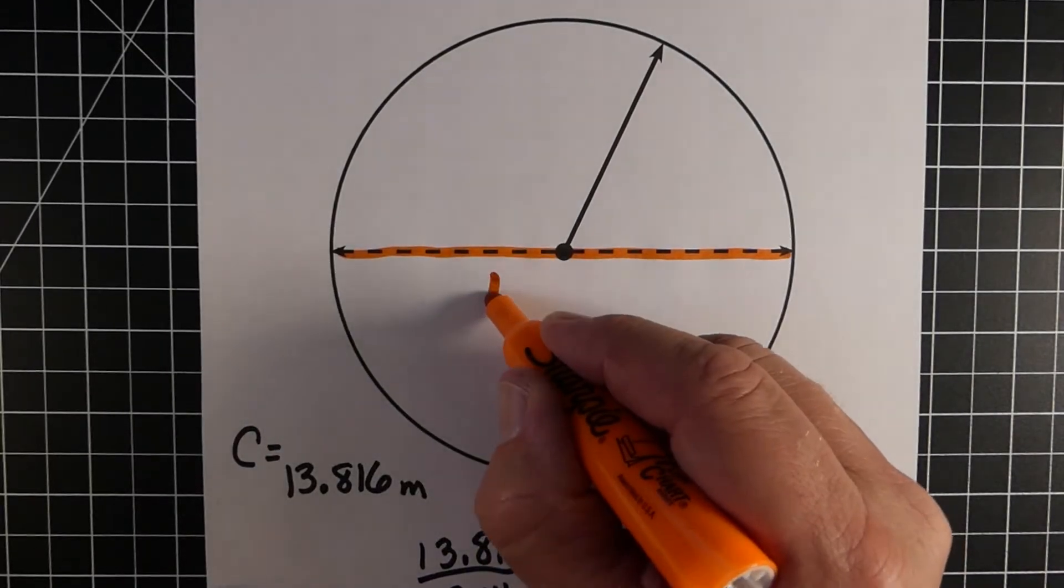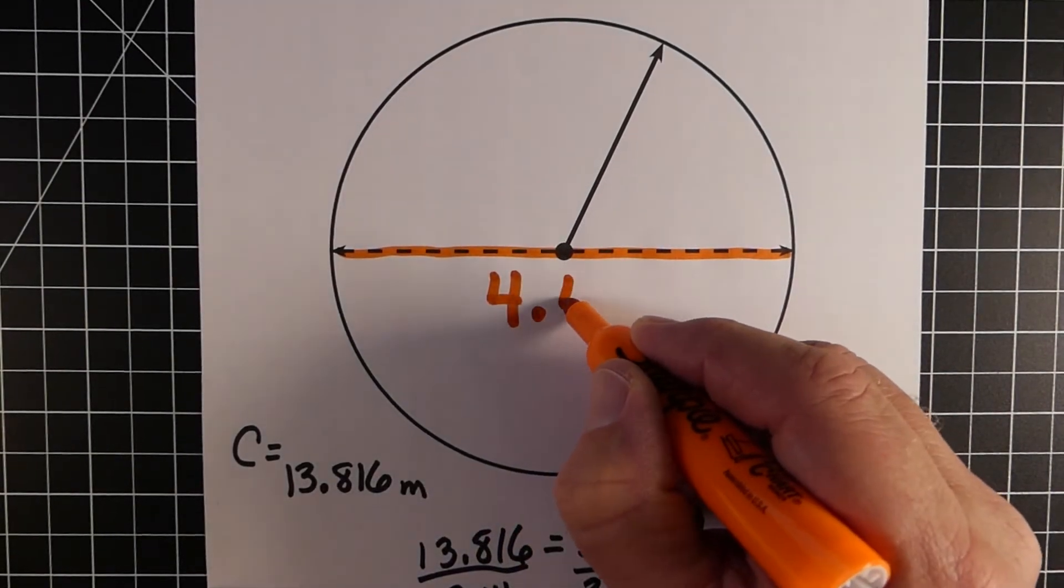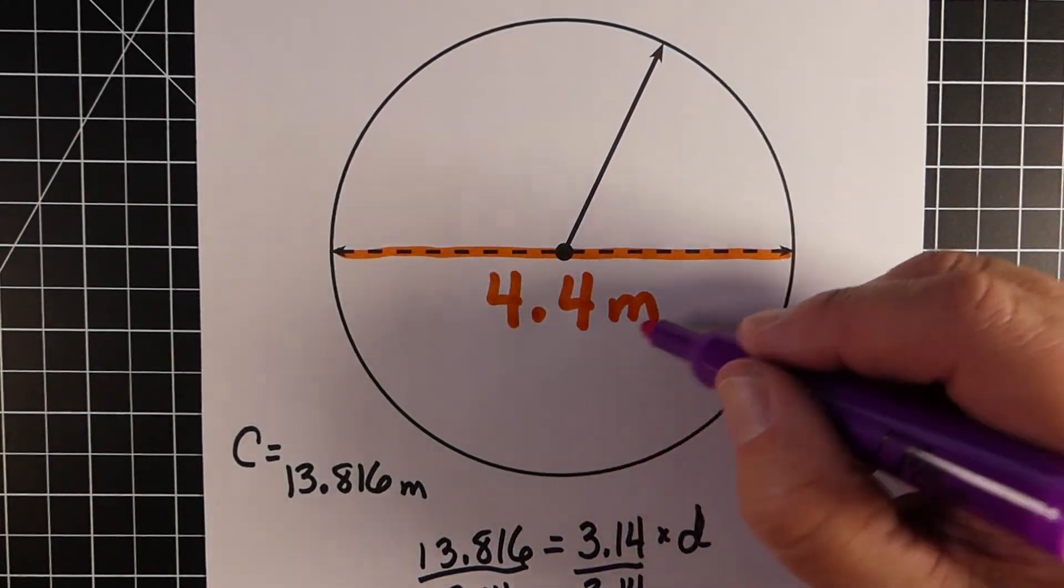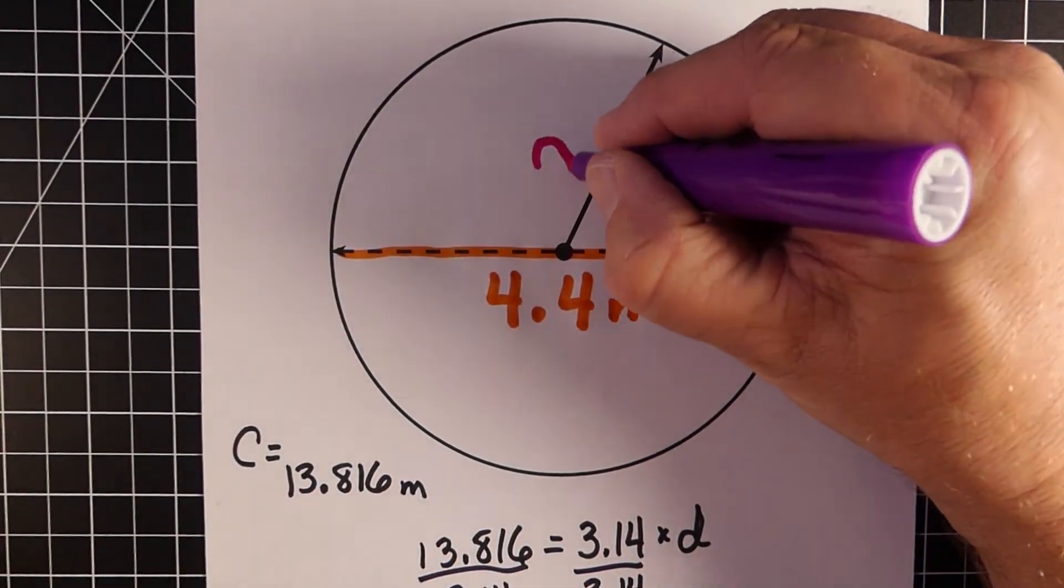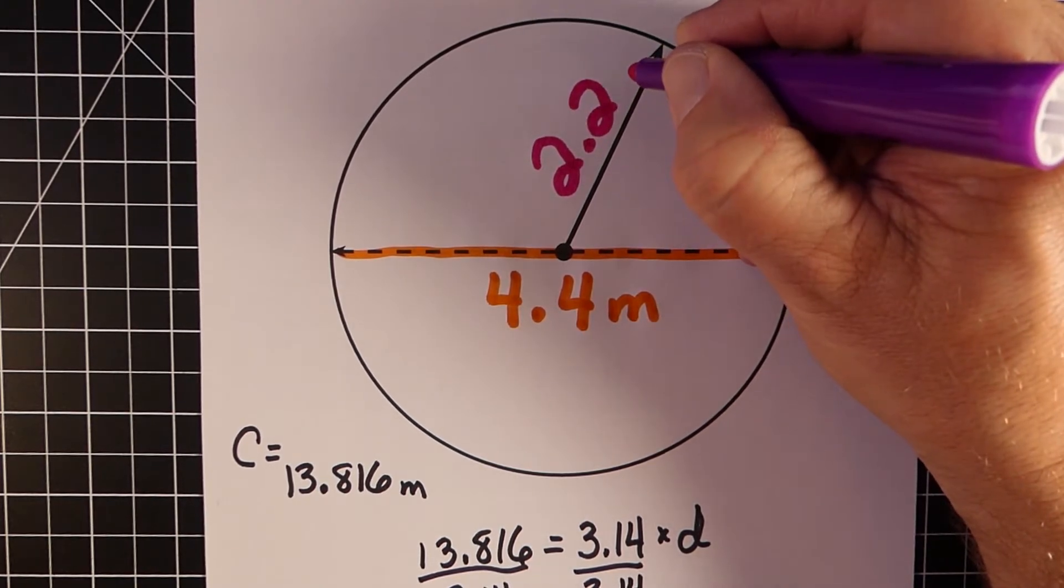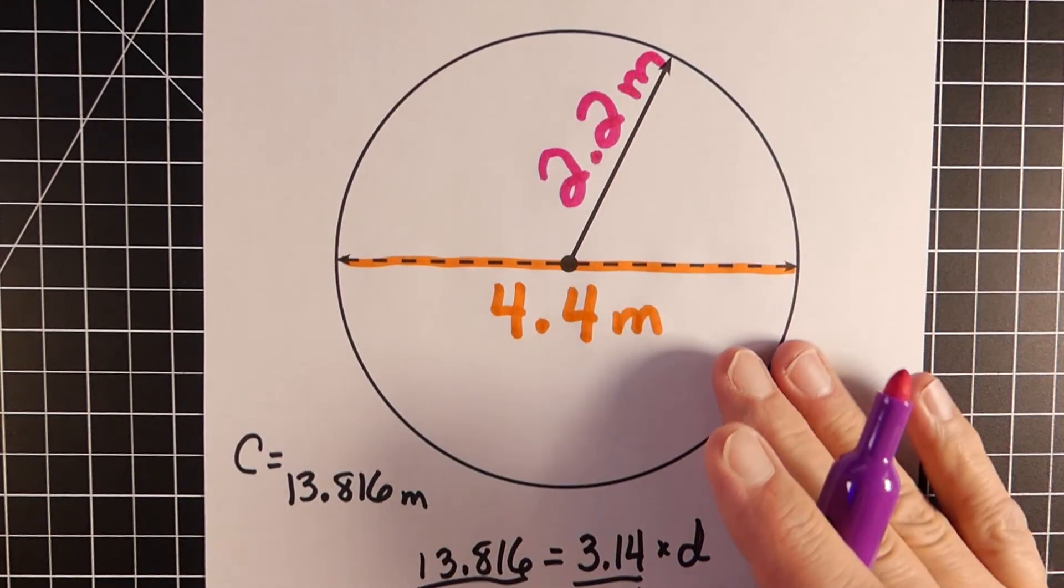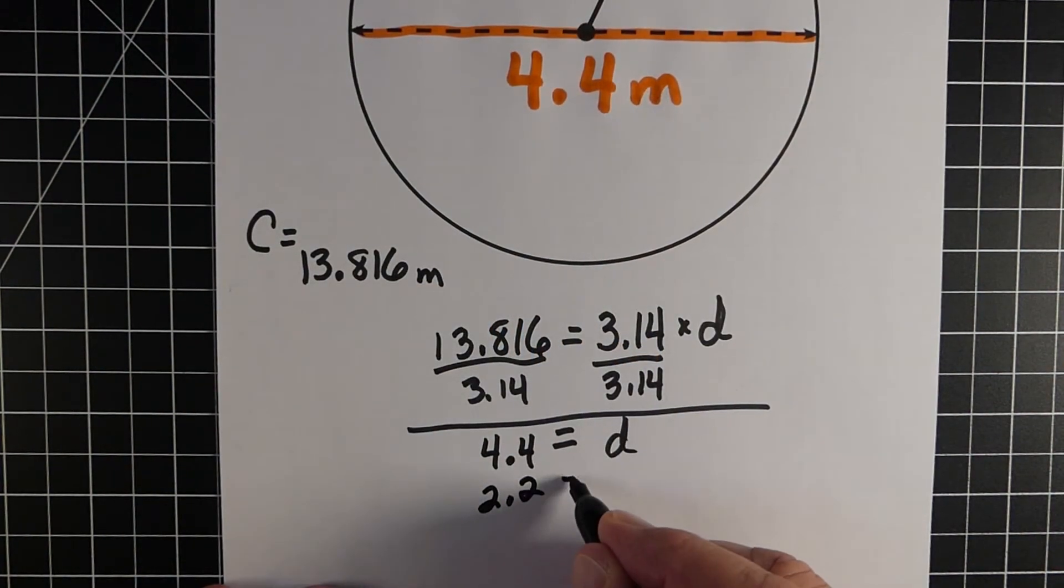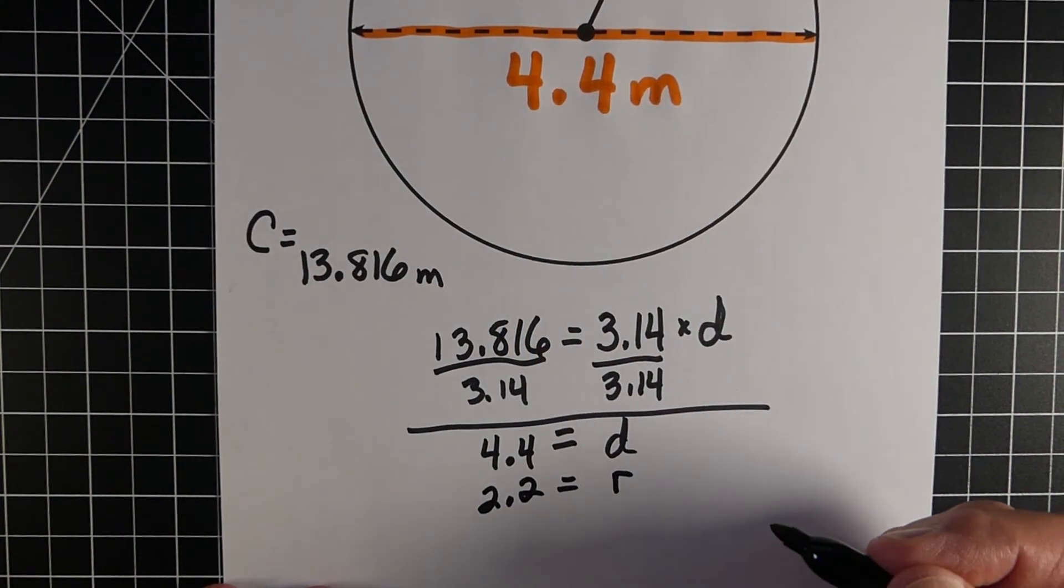So we'll just put that right down here. So 4.4 meters across. And again, just like in the other ones, our radius is going to be half that amount. So half of 4.4 is 2.2 meters. So that would be our radius. Okay, and again, that's just halfway across. So 4.4 for the diameter, and 2.2 for the radius.